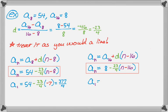If I use the other formula, a sub 1 should be 8 minus 23 over 4 times negative 15, which also gives me 377 over 4. So I actually know a sub 1 is definitely 377 over 4. And I confirmed that I got both of those formulas right by doing that.